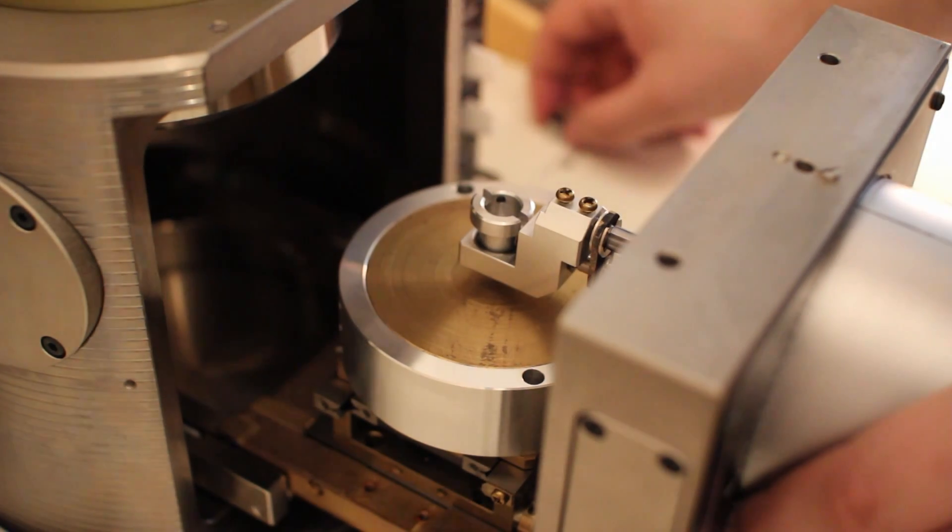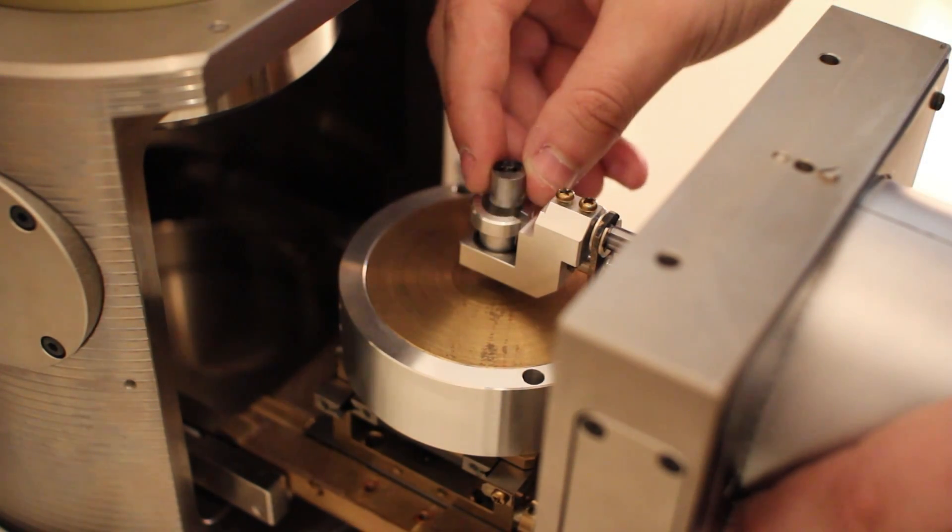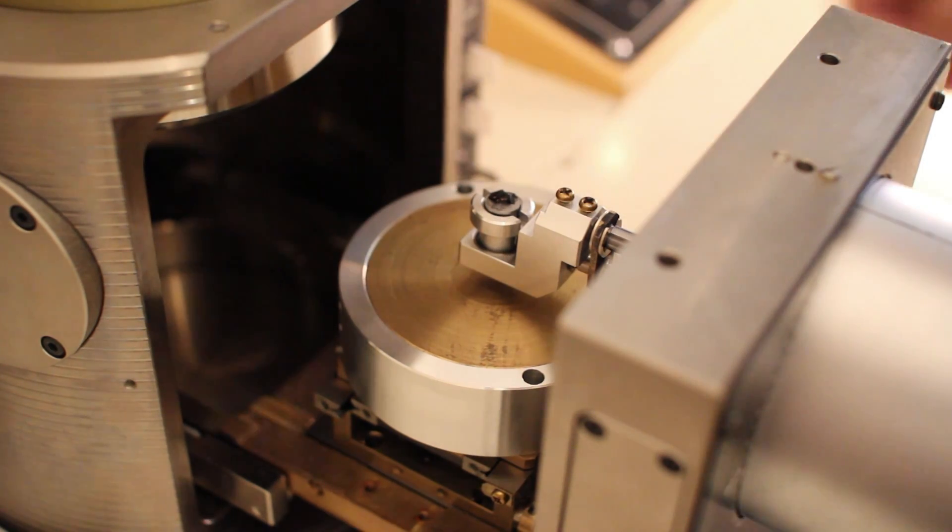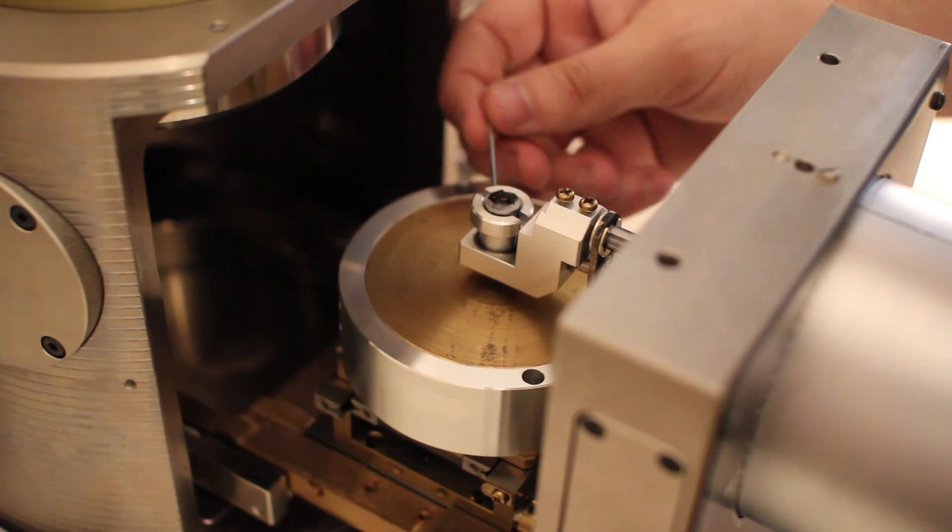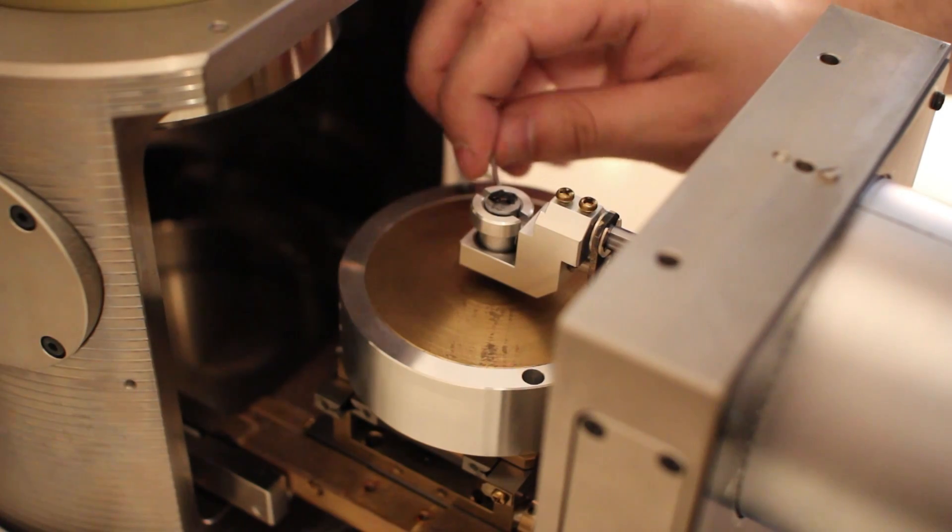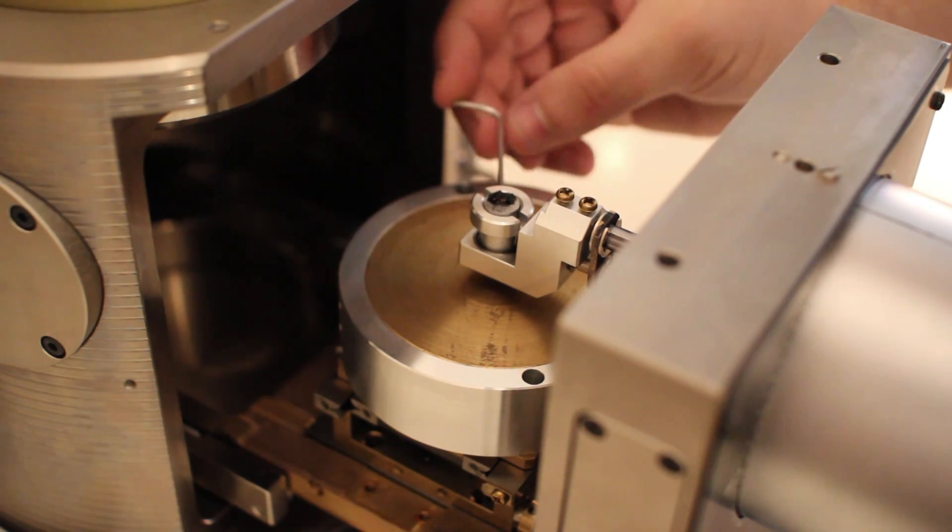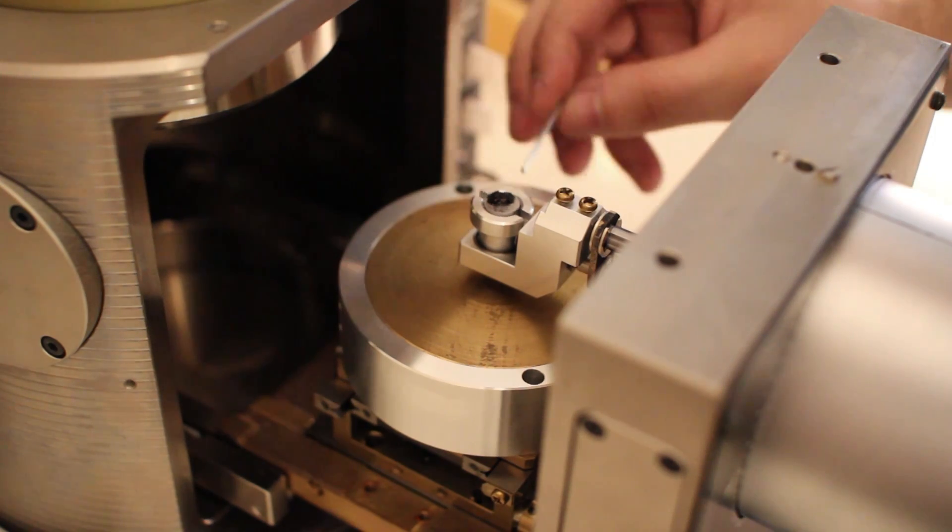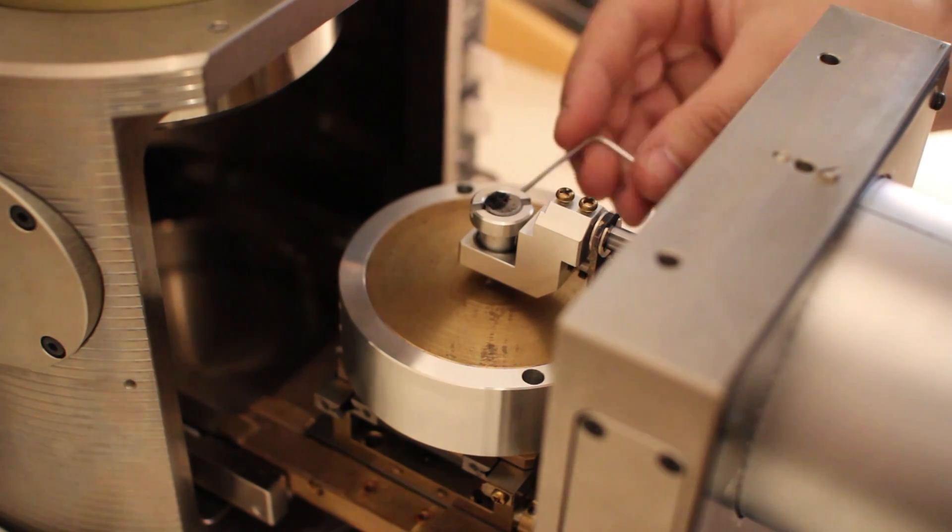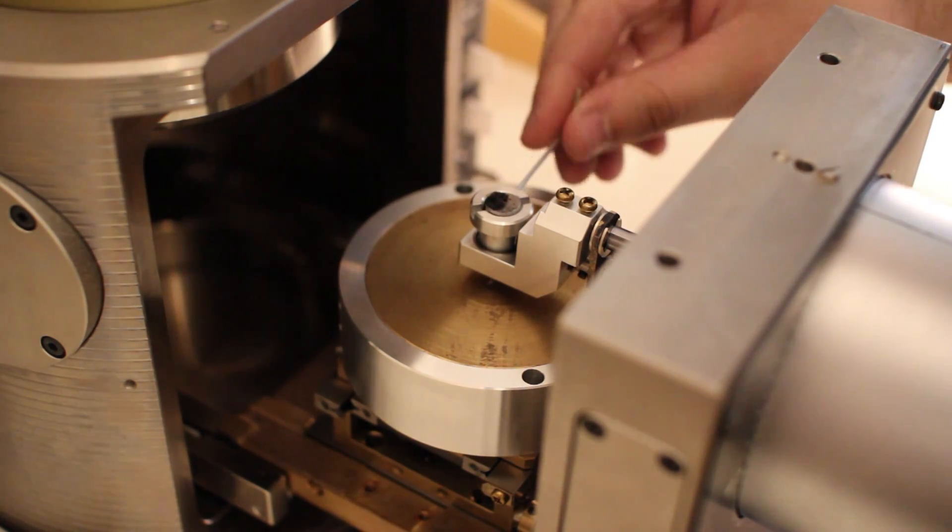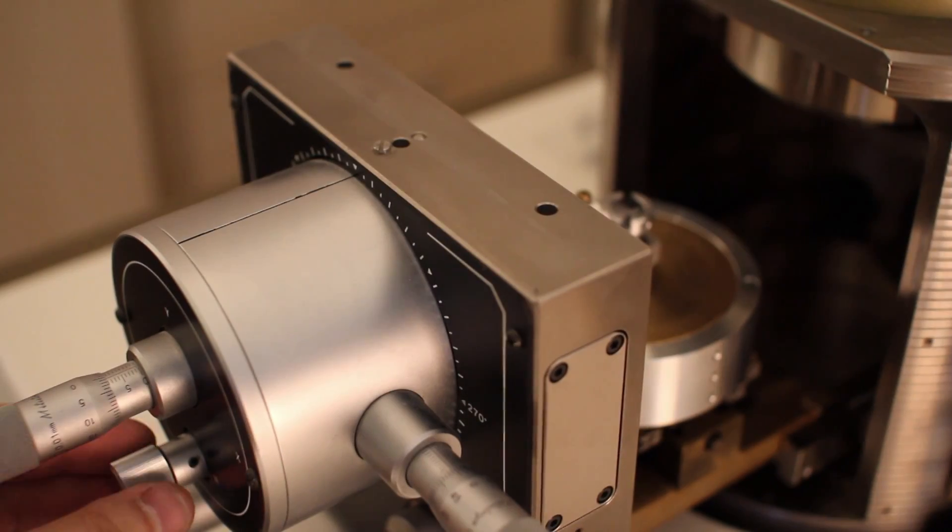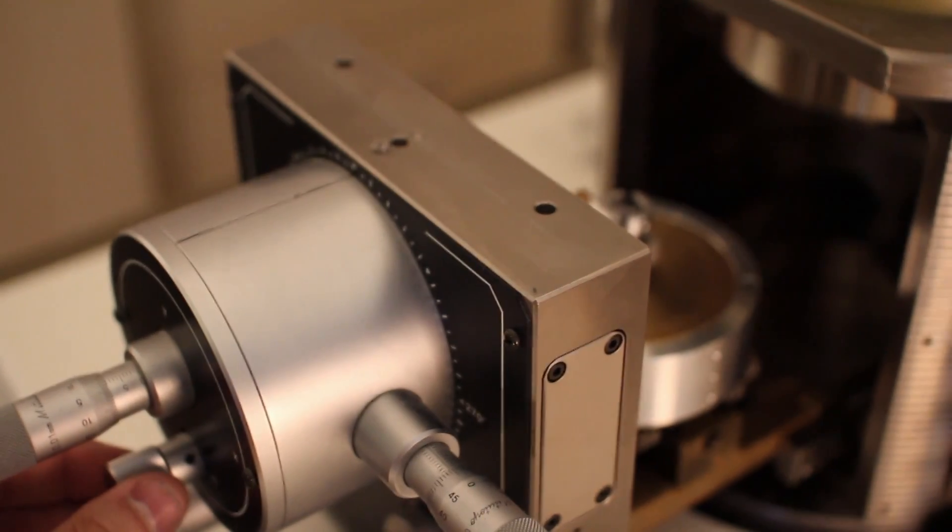The sample stub is then inserted into one of the sample holders and is firmly fastened with two set screws. This sample holder allows for both rotation and tilt, in addition to being moved in the x and y direction, as I'm showing here.